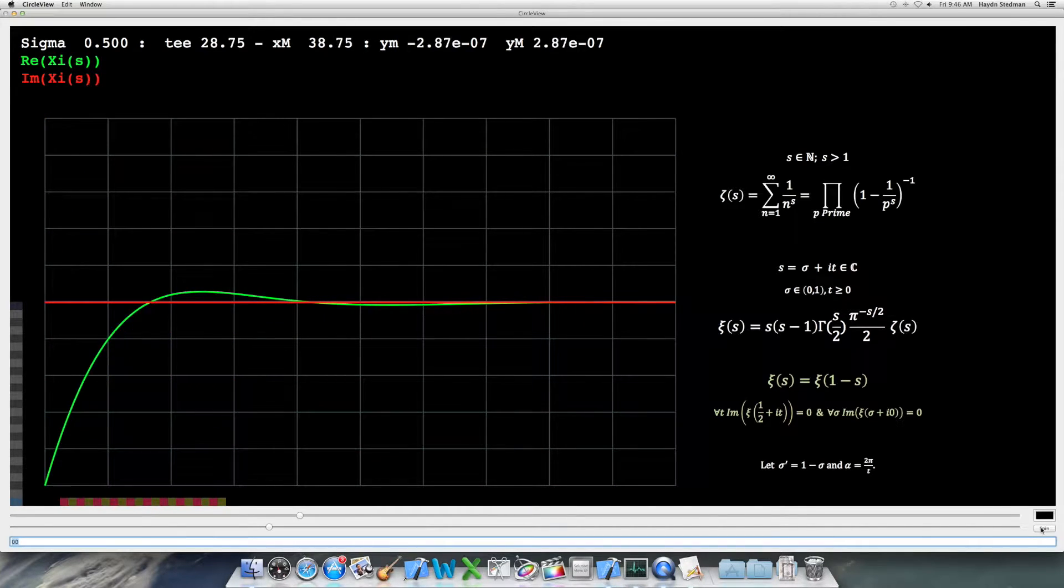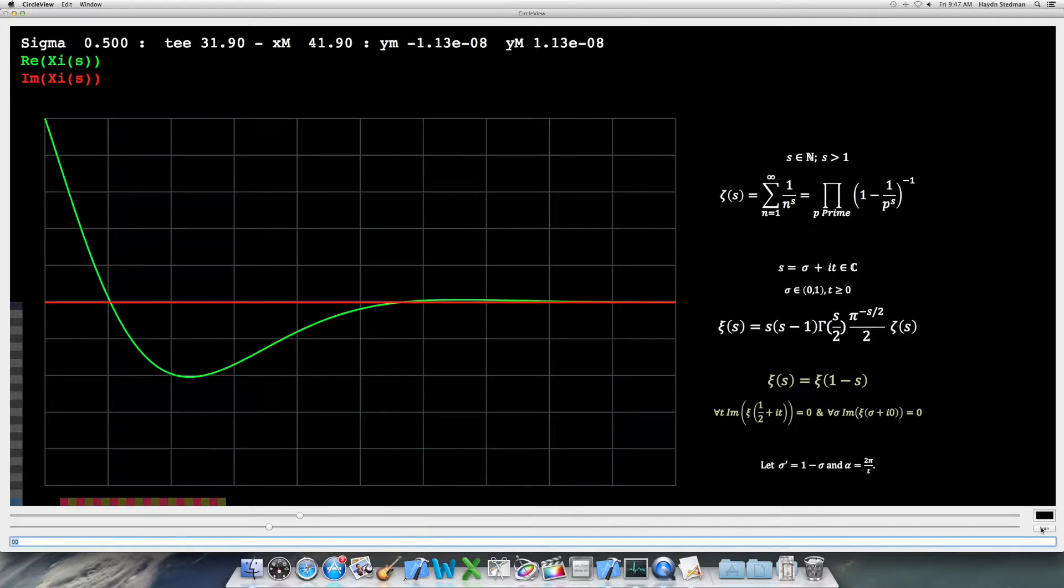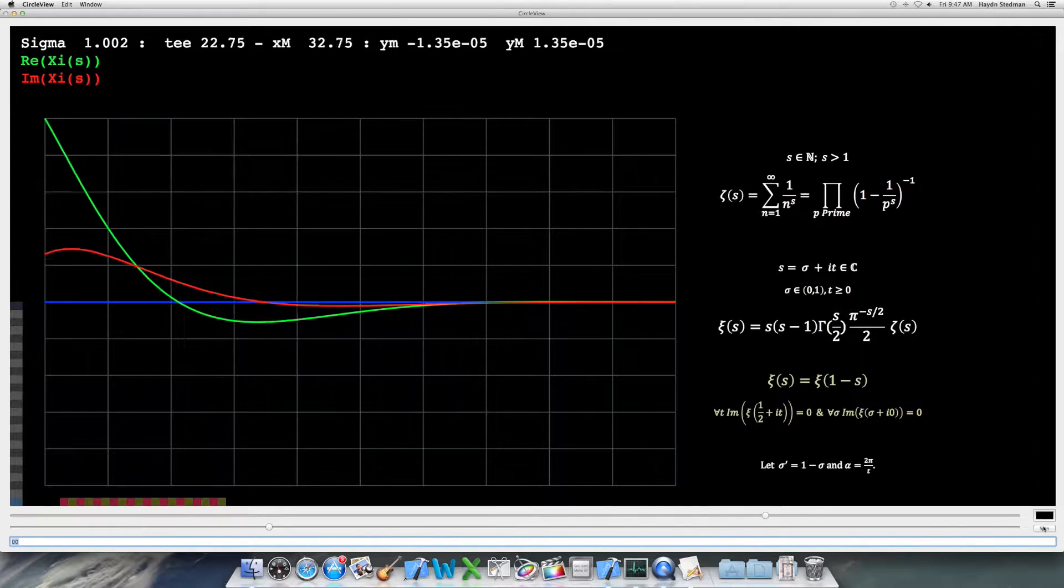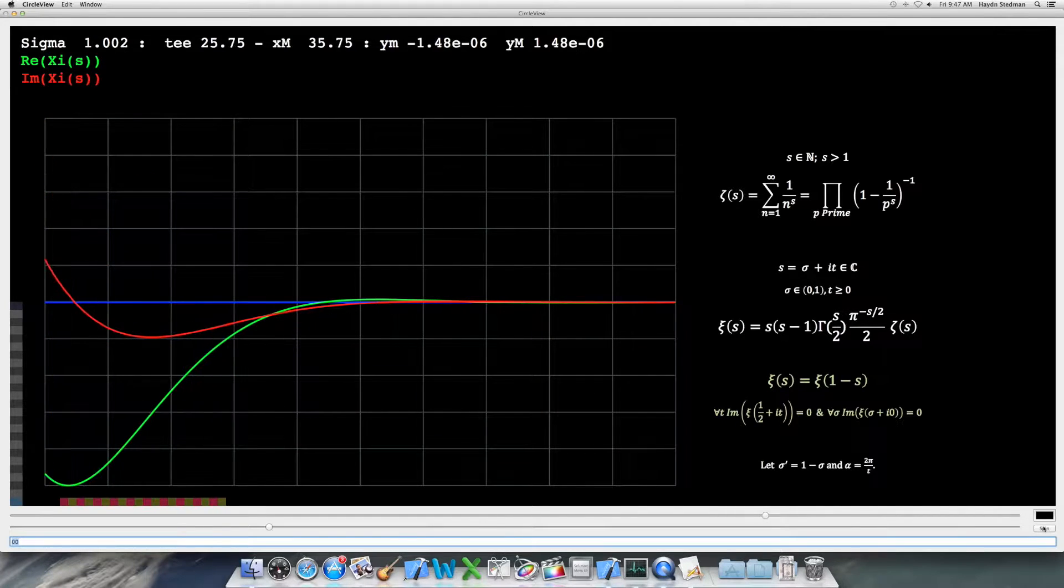This is a moving window and Xi on the critical line. Varying the value of Sigma has the effect shown. We keep rolling with Sigma equal to 1.